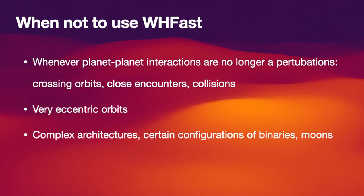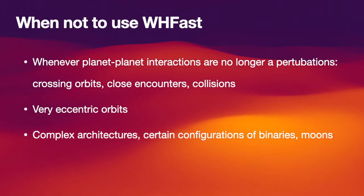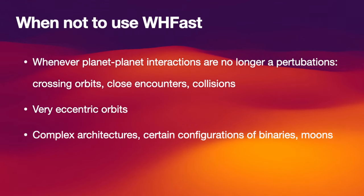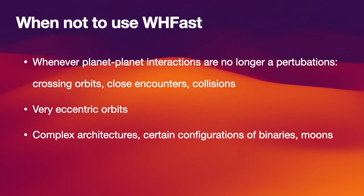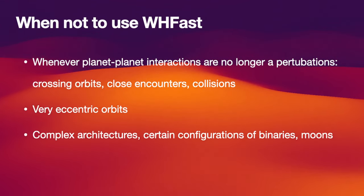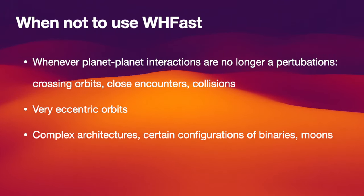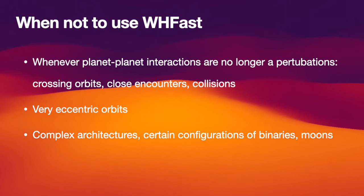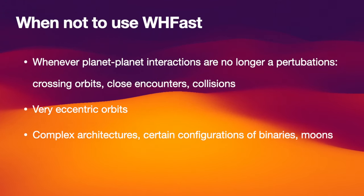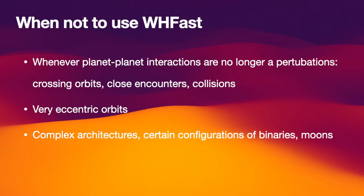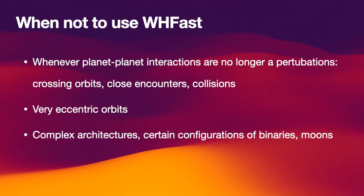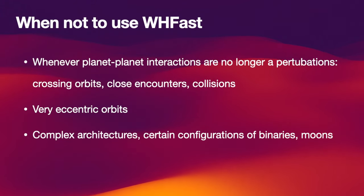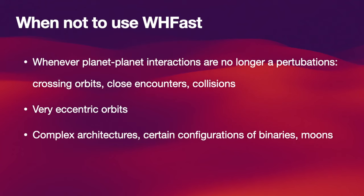Now, when should you not use WHFAST? In short, whenever planet-planet interactions are no longer considered a perturbation — you might have that for crossing orbits or for close encounters, whenever physical collisions happen with planets. In that case, the perturbations are either as strong as the central force or even larger, so use another integrator, for example IAS15 or one of the hybrid integrators. You might also not want to use WHFAST for very eccentric orbits — your timestep criteria will be too stringent and you'll need a very small timestep. Because WHFAST assumes a fixed timestep, you might be better off with a variable timestep integrator, such as a Bulirsch-Stoer integrator, IAS15, or again one of the hybrid integrators.